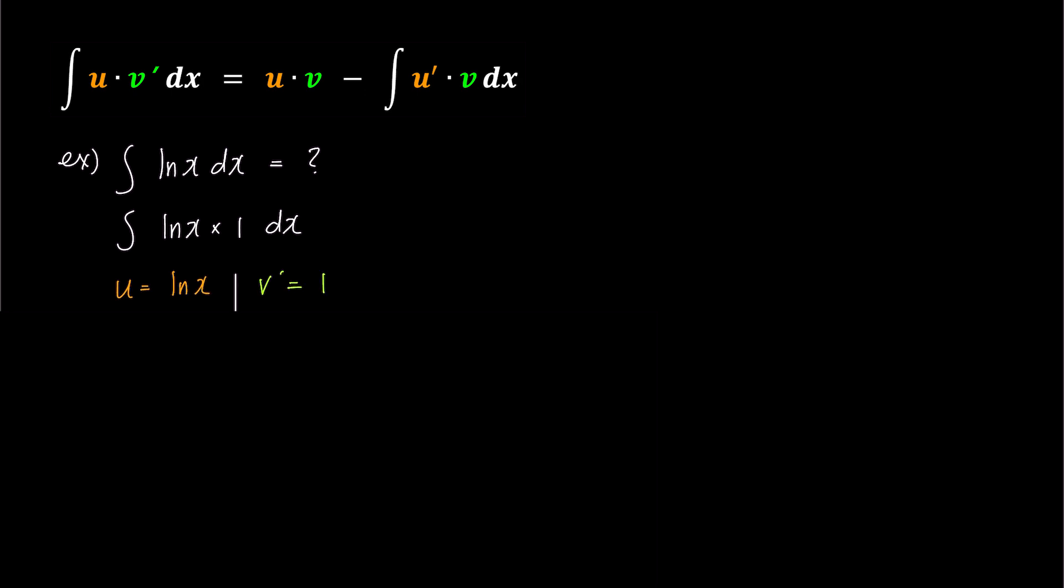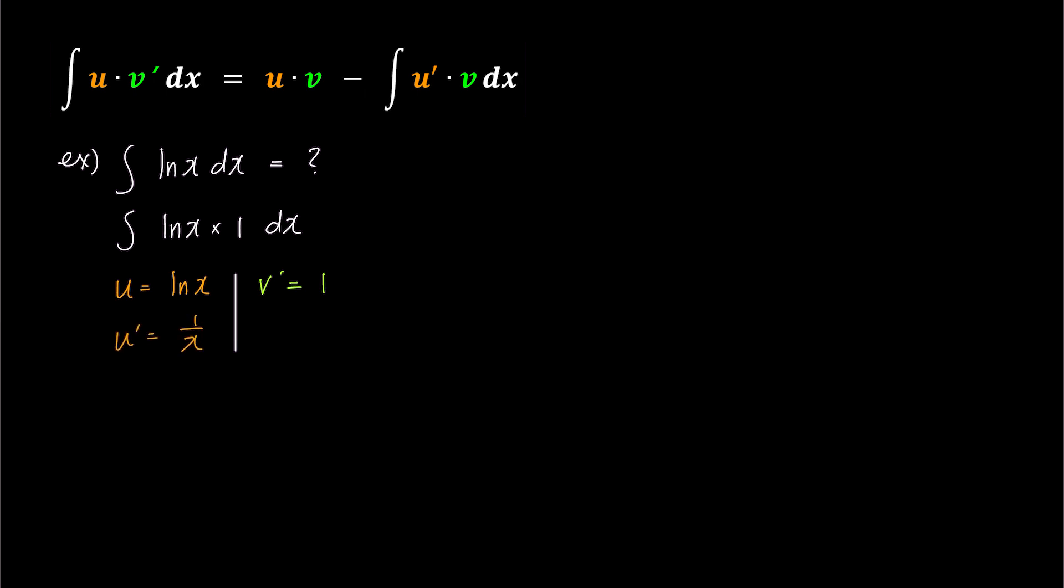Let's designate ln(x) as u and 1 as v'. If we were to consider v' as ln(x) in reverse, then we'll need to find the integral of ln(x) to determine v. However, that is exactly the problem we need to solve. So, we'll choose u as ln(x) and v' as 1. As a result, u' becomes 1 over x and v becomes x.